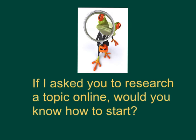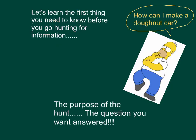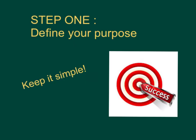So let's say I asked you to research a topic online - would you even know where to begin? Right now you're going to be learning the correct strategies to help you find information online. The first thing you need to know before you go hunting for information is the purpose of the hunt - the question you want answered. Kind of like the first step of the scientific method. Step one: define your purpose. Remember to keep it simple. Less is more in this search.